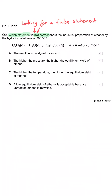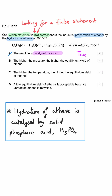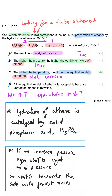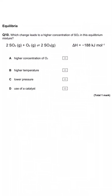Which statement is not correct about the industrial preparation of ethanol by the hydration of ethene at 300°C? A: the reaction is catalyzed by an acid — true, it's catalyzed by solid phosphoric acid. B: the higher the pressure, the higher the equilibrium yield of ethanol — true, there are two molecules on the left and one on the right, so increasing pressure shifts equilibrium right. C: the higher the temperature, the higher the equilibrium yield of ethanol — this is not correct. The forward reaction is exothermic, so increasing temperature shifts equilibrium left and decreases the yield.